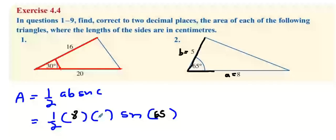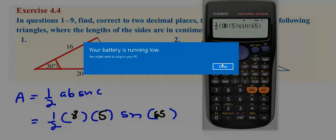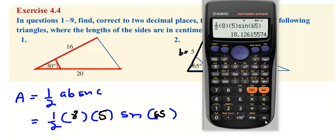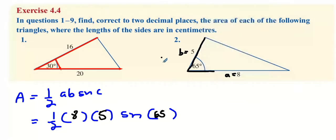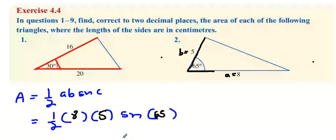A is 8, b is 5. Throw that into the calculator, so it's going to be 65 for the sine part. It's going to be 5 here, 8 here, and lo and behold you get 18.126. Once it's two decimal places, it's going to be 18.13 because 126 rounds up to 130.